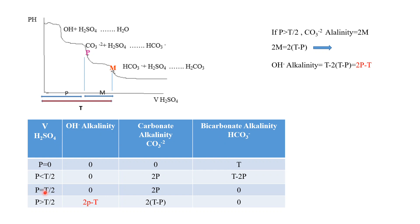If p equals half of t, we have no hydroxide alkalinity, no bicarbonate alkalinity, and we have only carbonate alkalinity. And if p is more than half of t, we have the fourth case of the table.